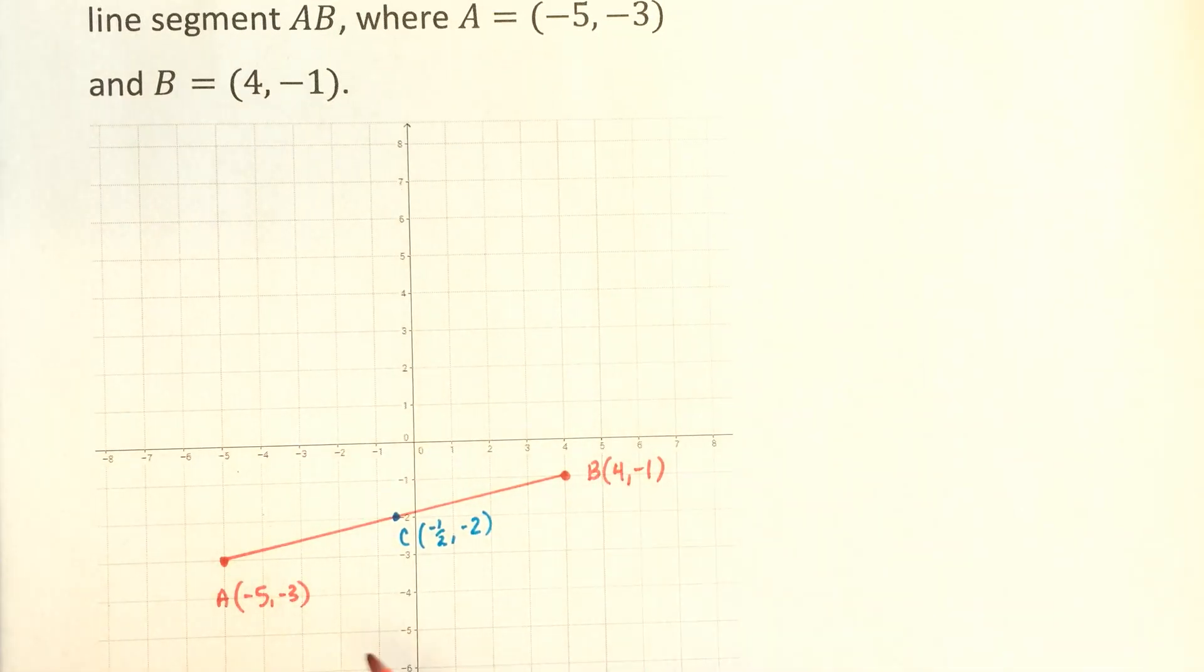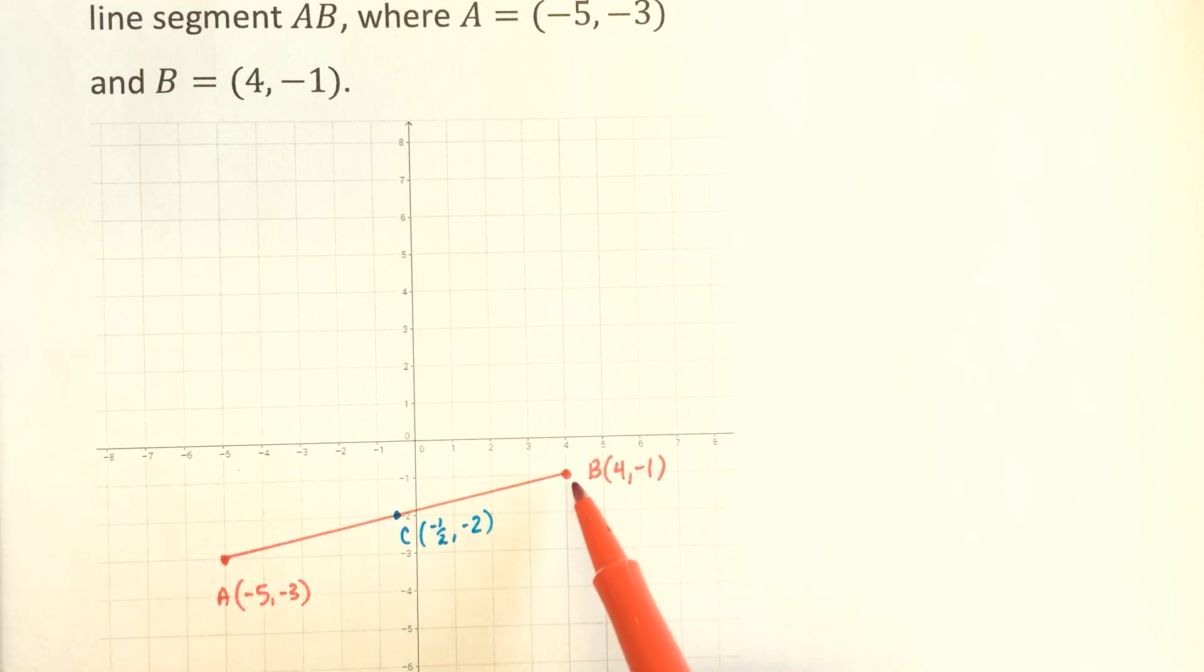AB we used in another video. I've already got it graphed here. There's A and B, the endpoints. And we also already found the midpoint, C, at negative one-half and negative two.